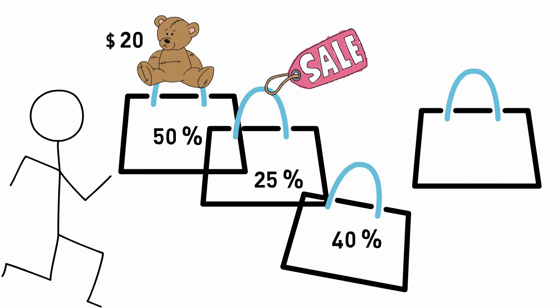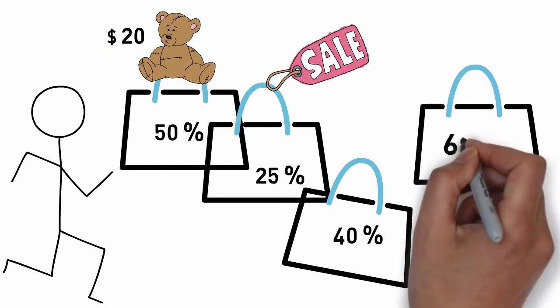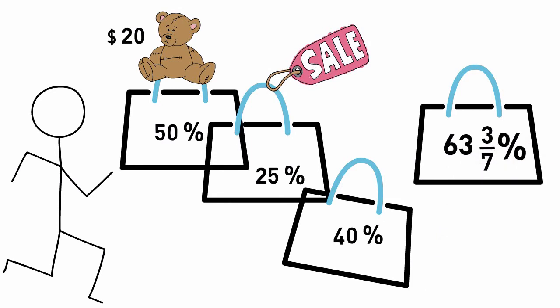Now what if you saw a sale sign saying 63 3/7%? Nah, I'll never see such a sign you say. But if you did, would you still be interested in buying the item?